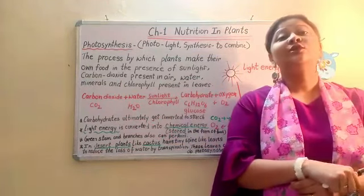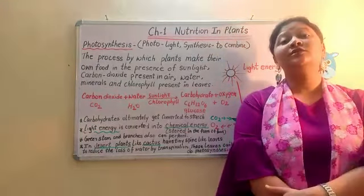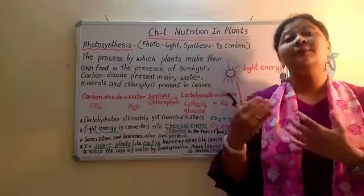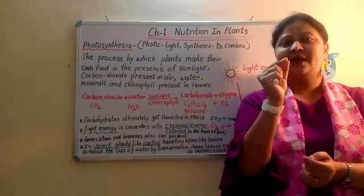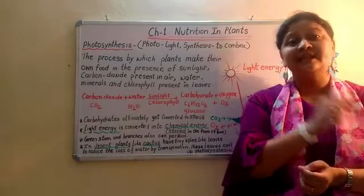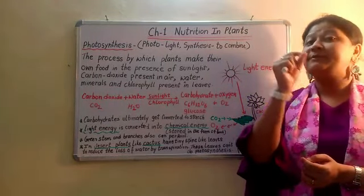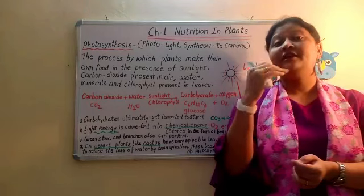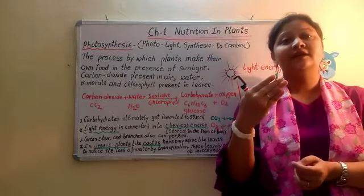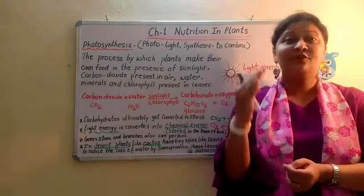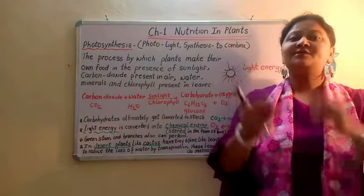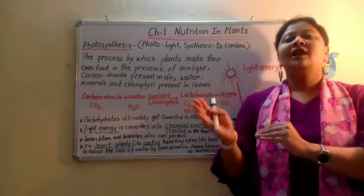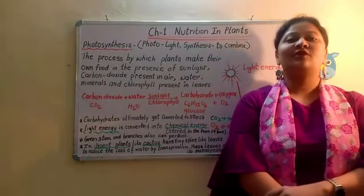Apart from green leaves, some parts of plants like the green stem or branches also contain chlorophyll in cases where leaves are unable to prepare food — as with the desert plant, where leaves are modified into spines to reduce water loss, and so the green stem and branches perform photosynthesis. Also, if we see plants having leaves of a color other than green, it doesn't mean they lack chlorophyll. Chlorophyll is still present, but other color pigments mask the effect of the green chlorophyll. Even so, chlorophyll is present in small amounts, which allows those plants to prepare food by the process of photosynthesis.